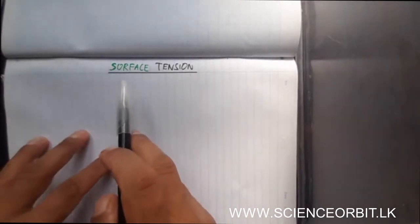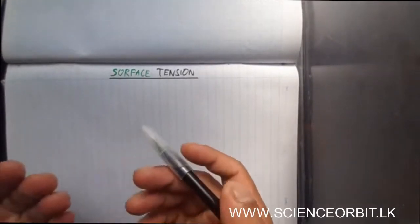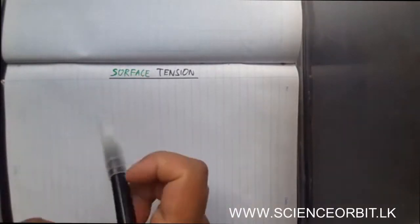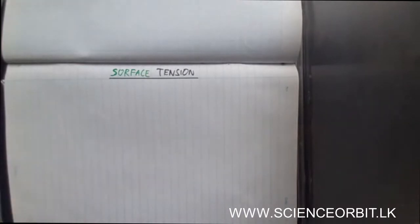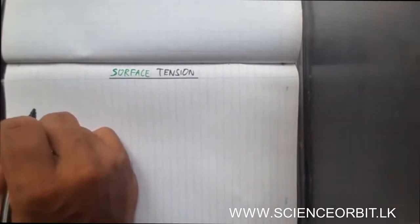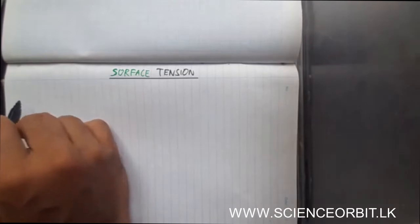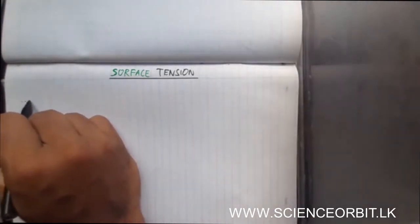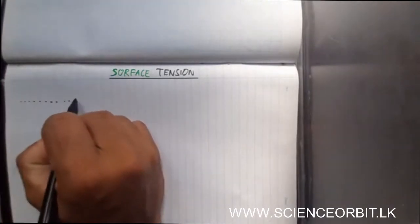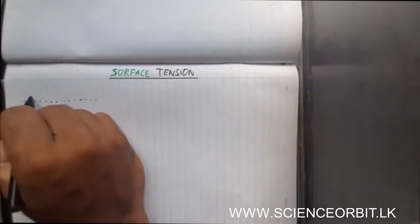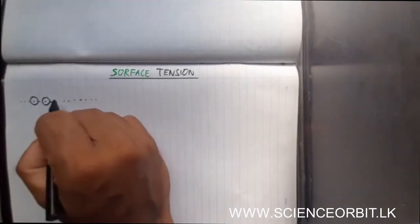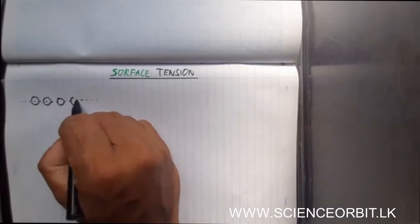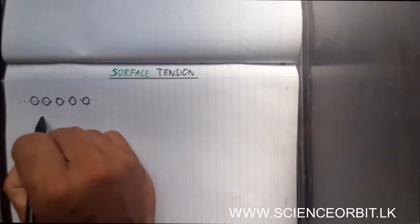Now let us see how surface tension is created. When it comes to viscosity, it was created due to the friction or resistive force between liquid layers. Likewise, let us see how surface tension is created. Let us take a sample of a liquid inside a vessel. There will be certain liquid molecules — since this is physics, let us say particles — on the surface as well as particles inside.